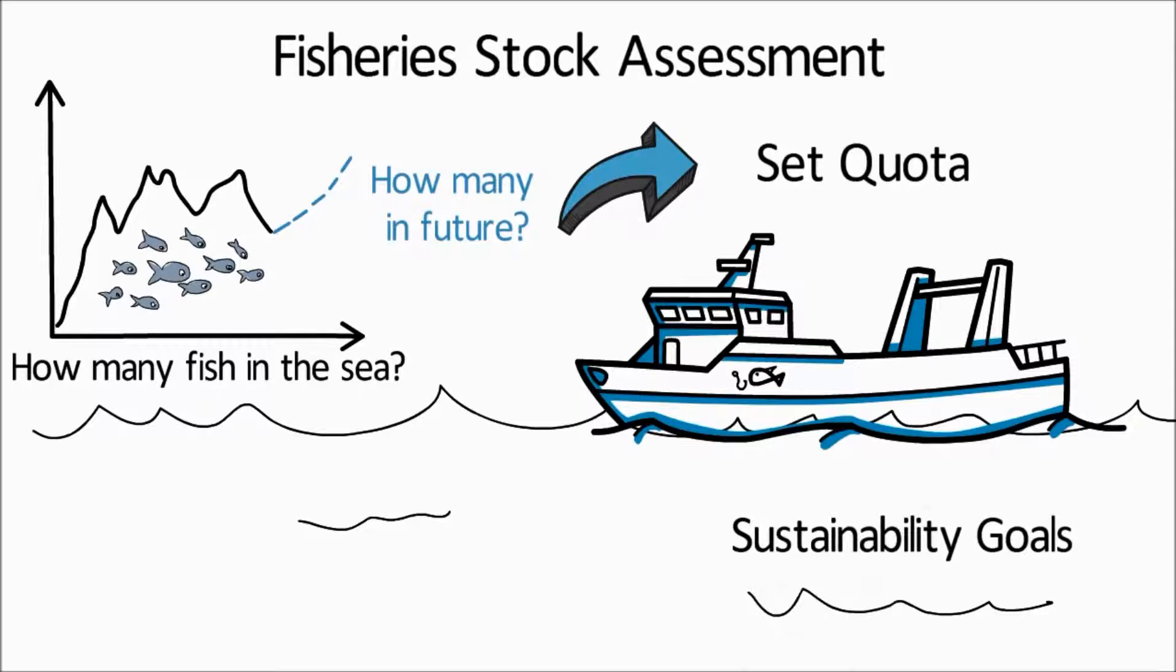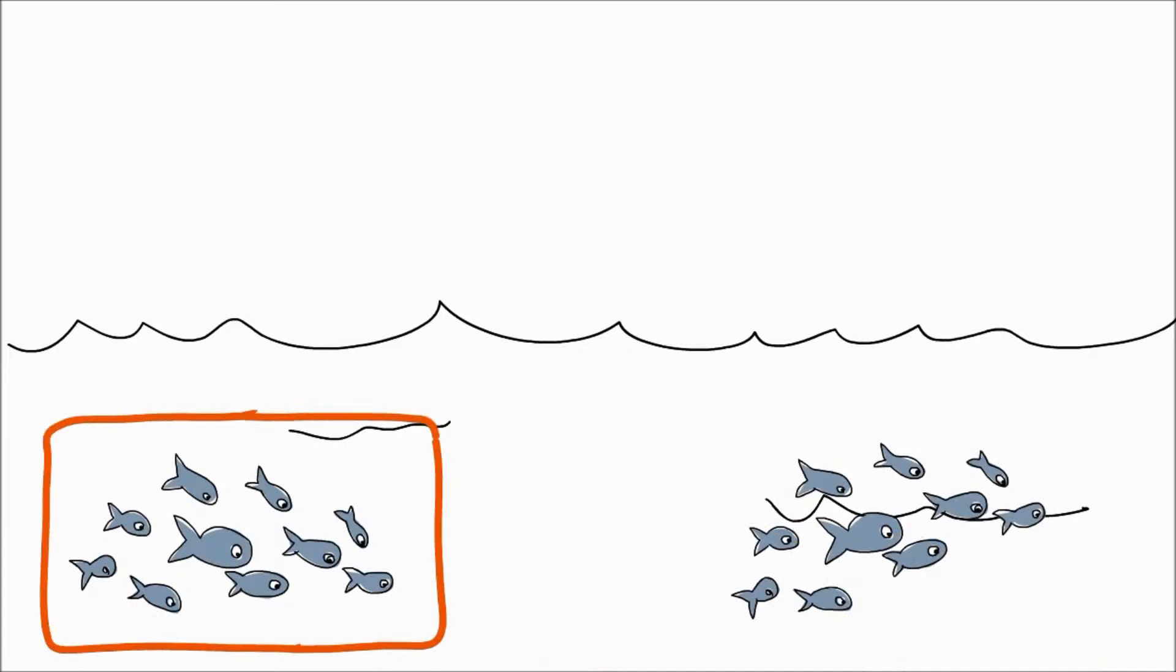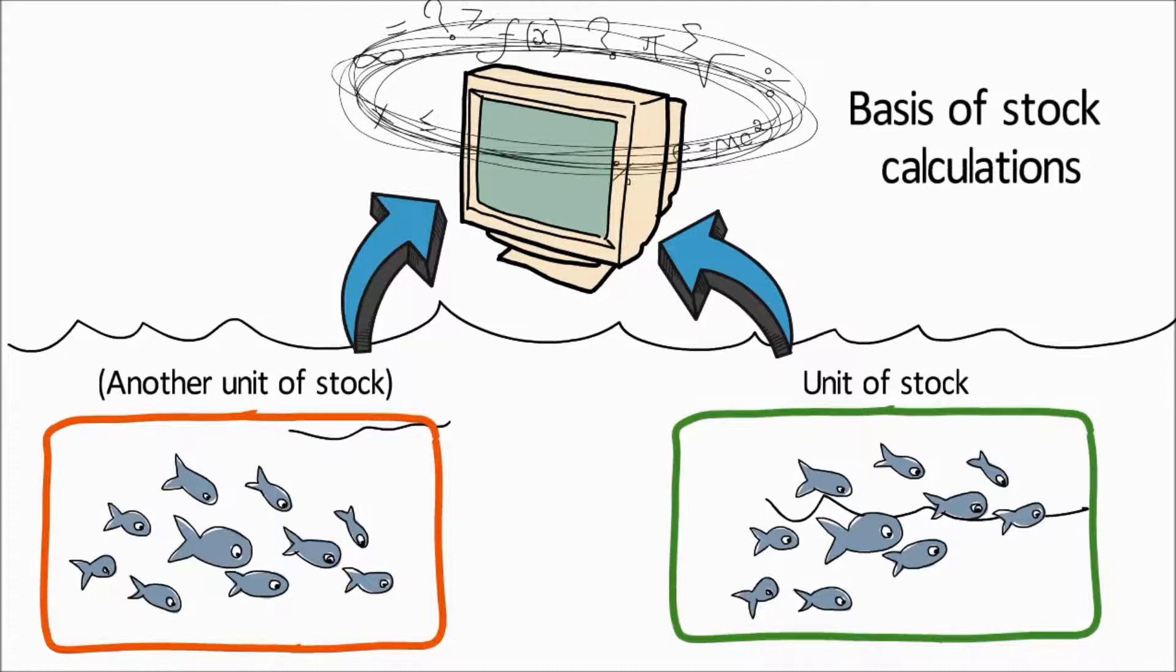In order to assess the status of fish populations, the species are first divided into discrete units called stocks, which are then used as the basis of stock assessment calculations.